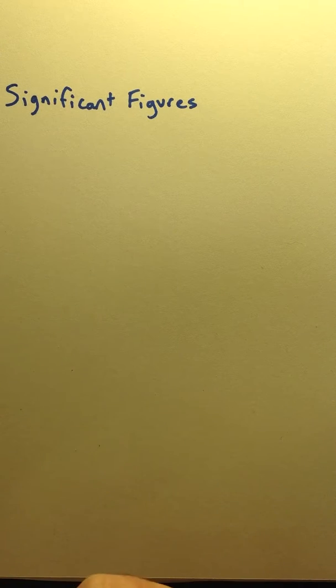Significant figures are used in science because you're only as good as the equipment you measure by. So there's five basic types of numbers that we're going to look at before we start any of the rules on significant figures.